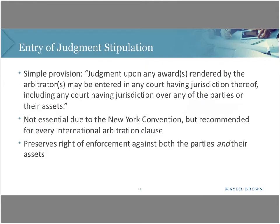Next, the entry of judgment stipulation. This simple provision states: 'Any judgment rendered by the arbitrators may be entered in any court having jurisdiction, including a court having jurisdiction over any of the parties or their assets.' It's crucial to include the reference to assets, because you may want to enforce the award somewhere where the party is not located but has sufficient assets. With the New York Convention, you can enforce the award anywhere in the world where the country is a signatory — wherever their assets or the parties are located.